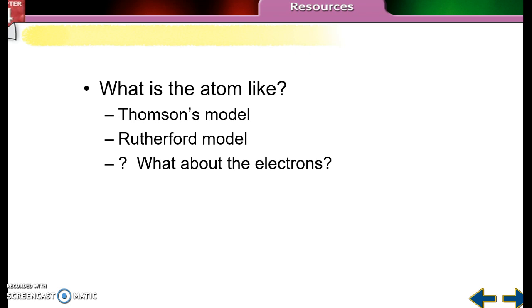Thompson came up with the plum pudding model. Remember that with the plum pudding model, you had a dense, positive sphere, and you had random negatives scattered throughout. Those random negatives were the electrons. The whole thing was positive and the negative electrons were scattered throughout.